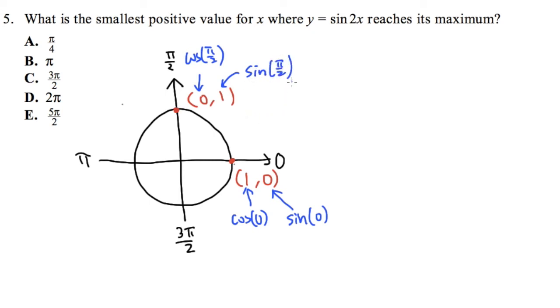Sin of pi over 2 will give us the maximum value, positive 1. And in fact, that's the first time that it will happen, the first positive value that you will get the maximum value for sine.